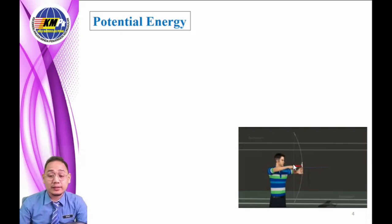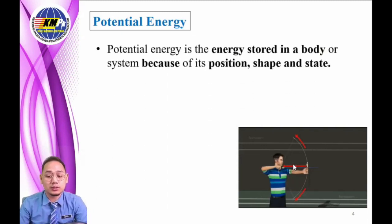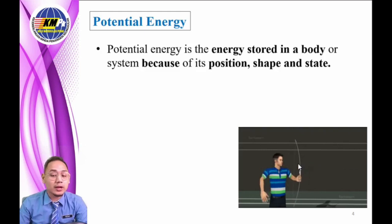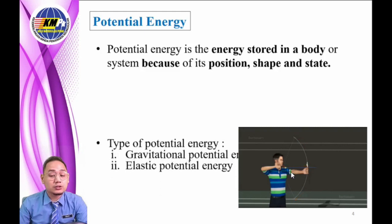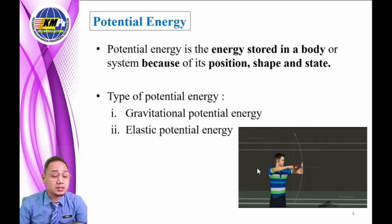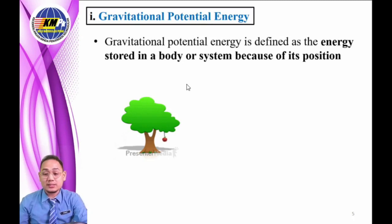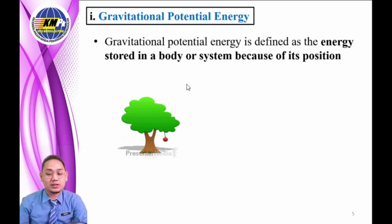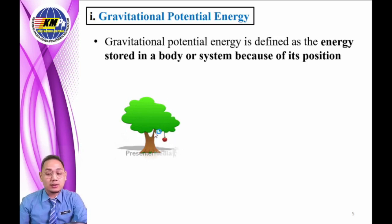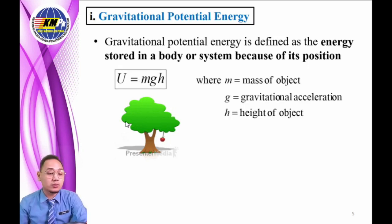Potential energy: an object can store energy by altering its position from its equilibrium position. For example, a drawn bow is able to store energy as a result of its position being changed — this is what we define as potential energy. There are two types of potential energy: gravitational potential energy and elastic potential energy. Gravitational potential energy is the energy stored in an object as the result of its vertical position or height, stored due to the gravitational attraction of the Earth for the object. Thus, giving the formula of gravitational potential energy: U = mgh.